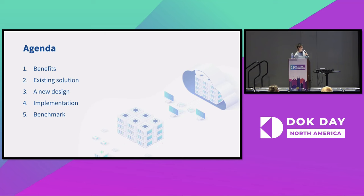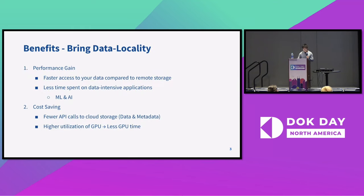The most important advantage this file system brings is data locality. There are two main benefits: first, performance gain — by bringing your data from remote storage to your computing node, you have faster access compared to remote storage like S3, so less time is spent on data-intensive applications. It is also very cost-saving because fewer API calls are made to cloud storage. Because of the performance gain, you'll also have higher GPU utilization, resulting in less GPU time and faster training.